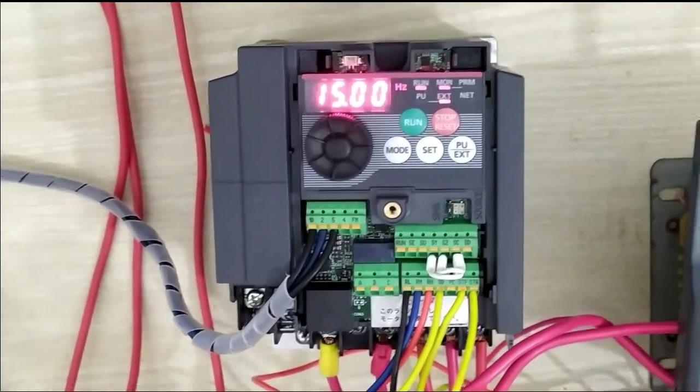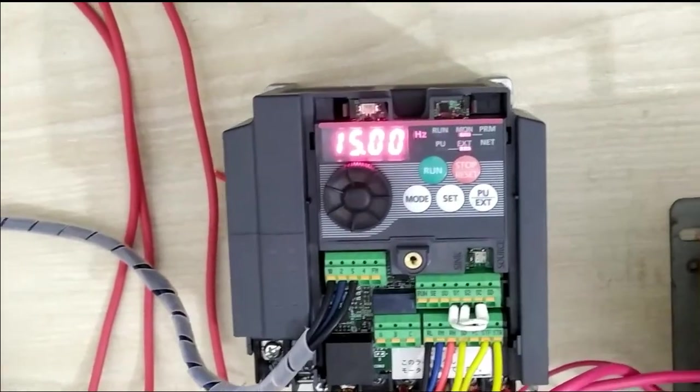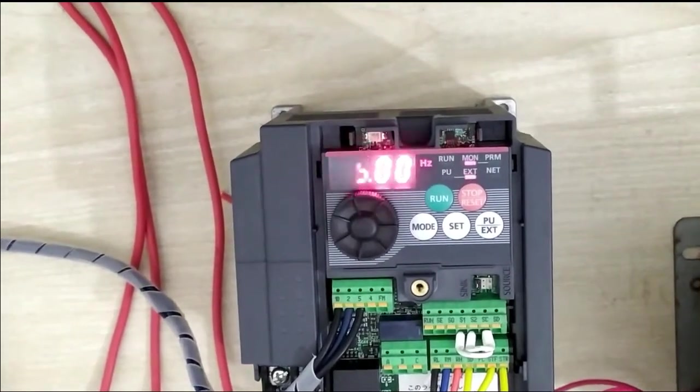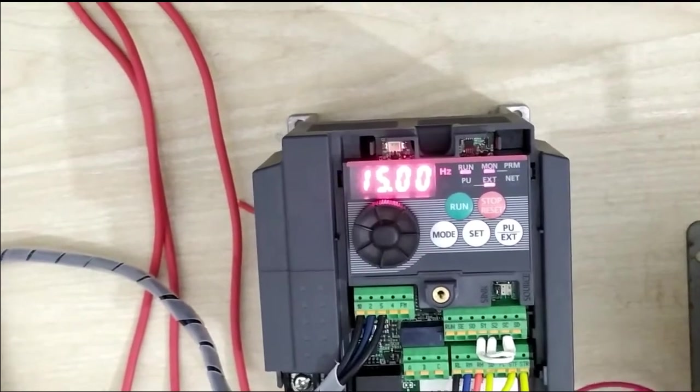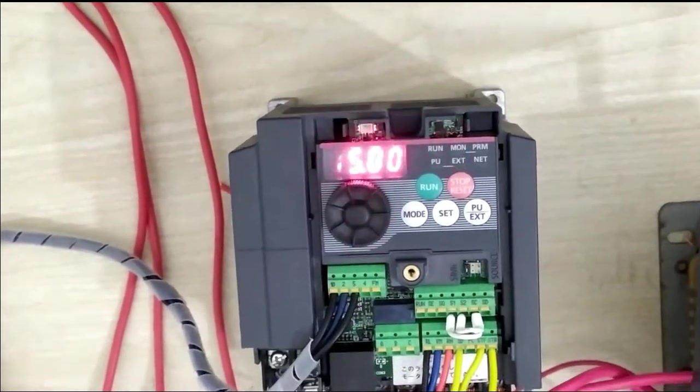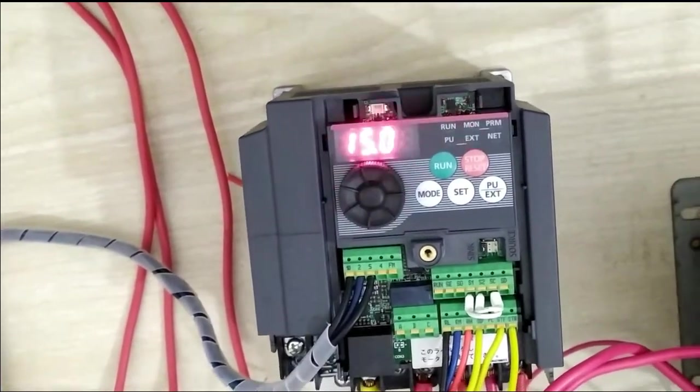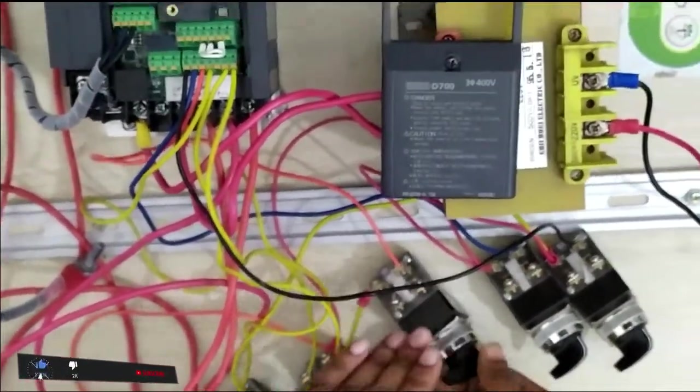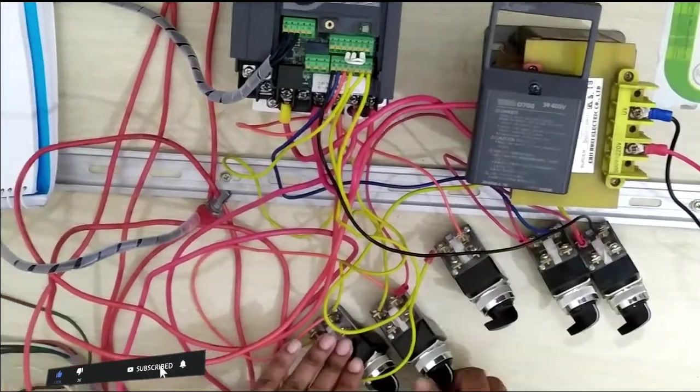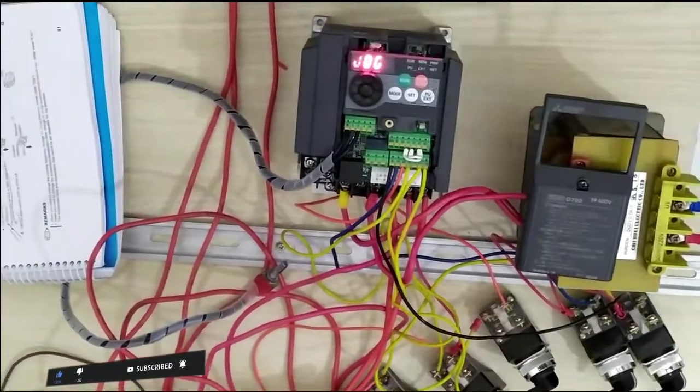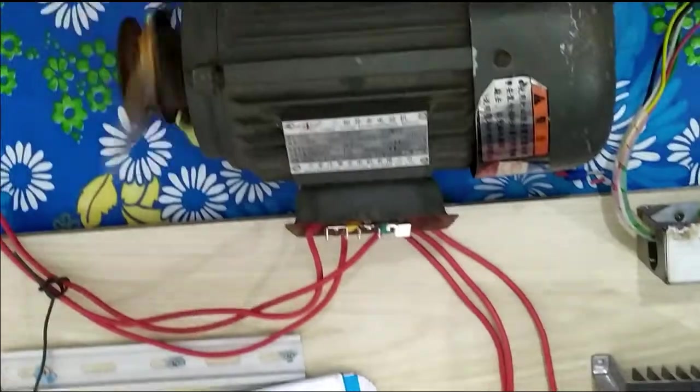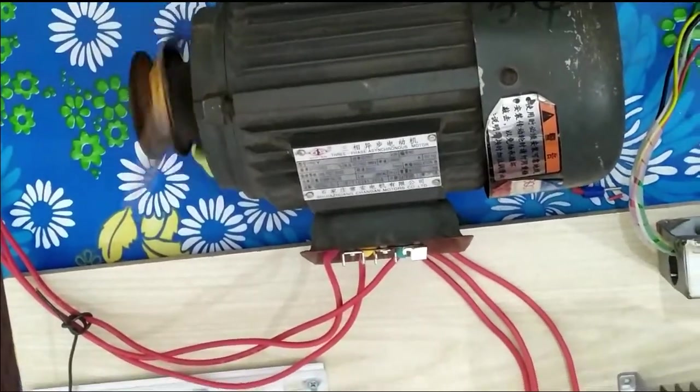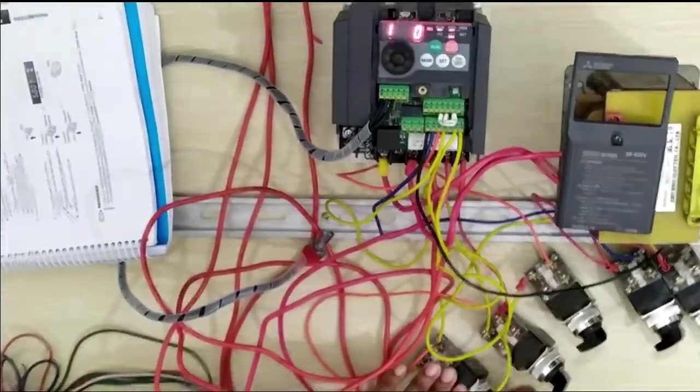You can set 15 Hertz or 25 Hertz - it depends on your factory level work or production requirements. This is the jog frequency operation, with direction maintained. Now it's rotating in reverse, and now it's going forward. Forward and reverse are maintained by two inputs: STF and STR, and it works in jog mode.